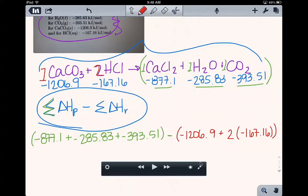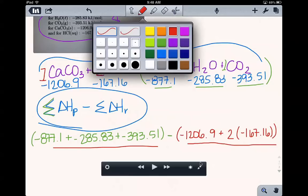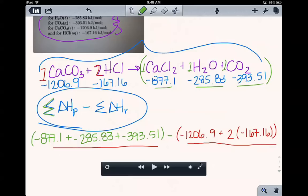And so all I did was I took my delta HF's of my products, and I subtracted my delta HF of the reactants. So I'm going to do this in a step-by-step process. And first I'm going to add up all of my enthalpies of my products. And so this works out to be negative 1556.44.